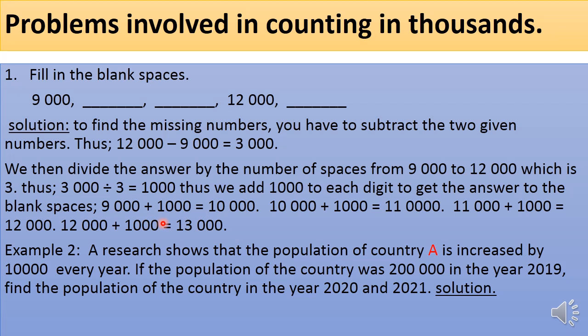Now look at Example 2. A research shows that the population of Country A — that is America — increases by 10,000 every year. If the population was 200,000 in the year 2019, find the population in 2020 and 2021. Since it increases by 10,000 every year, we add 10,000 each year to find the answer.